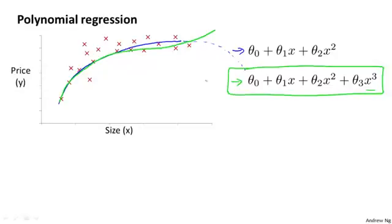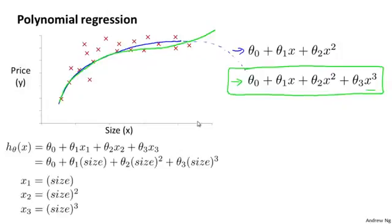So how do we actually fit a model like this to our data? Using the machinery of multivariate linear regression, we can do this with a pretty simple modification to our algorithm. The form of the hypothesis we know how to fit looks like this, where h of x is theta 0 plus theta 1 x1 plus theta 2 x2 plus theta 3 x3. If we want to fit this cubic model, the predicted price of a house is theta 0 plus theta 1 times the size of the house plus theta 2 times the square size of the house, and then plus theta 3 times the cube of the size of the house.